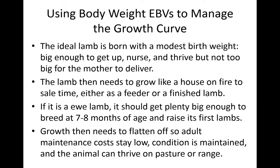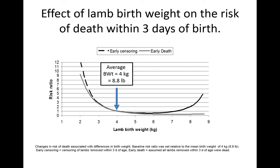That lamb needs to grow rapidly until sale time as a feeder or finished lamb, and keep growing until it goes to market. A ewe lamb needs to get big enough to breed at seven or eight months of age and raise her first lamb. After that, growth needs to flatten off so adult maintenance costs stay low and the animal can thrive on pasture and range. Big ewes are high-maintenance and also have a harder time taking care of themselves when pasture is short.